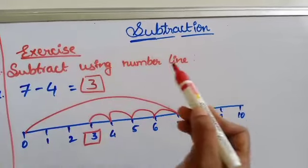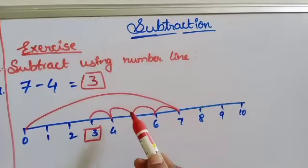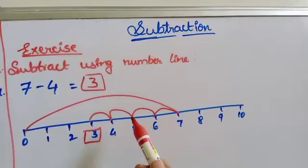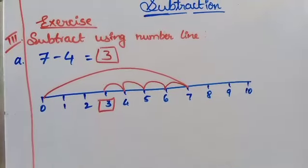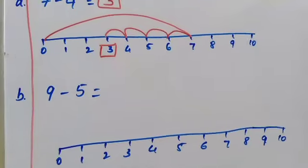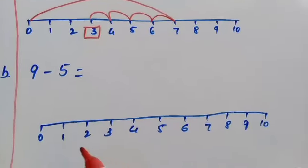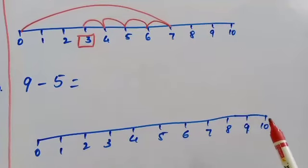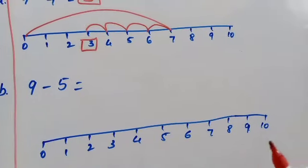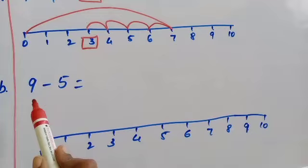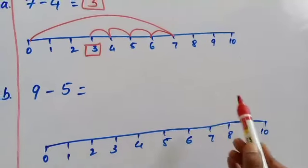So from 0 we jump to the first number, which is 7, and then we come back — that is, backward — by the second number, which is 4. The next example is 9 minus 5. So first we draw a straight line with numbers 0 to 10. Then we keep our pencil on 0 and jump directly to 9.